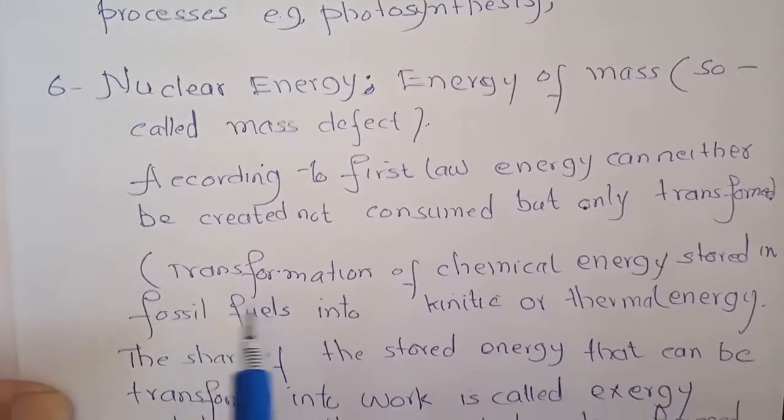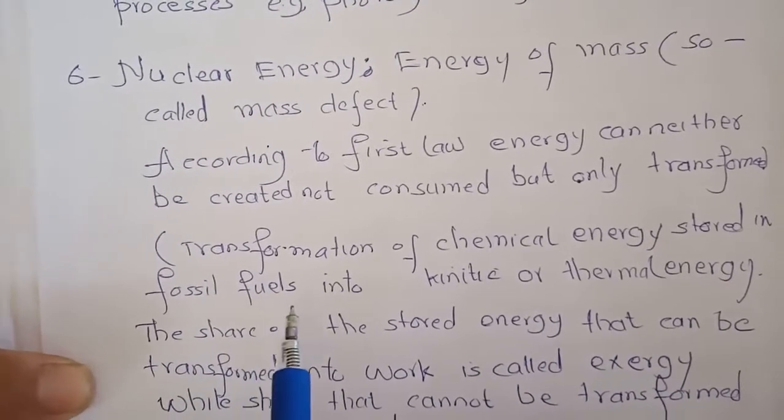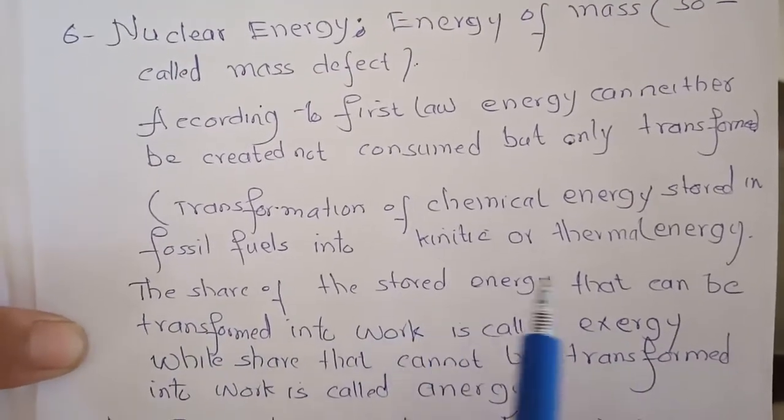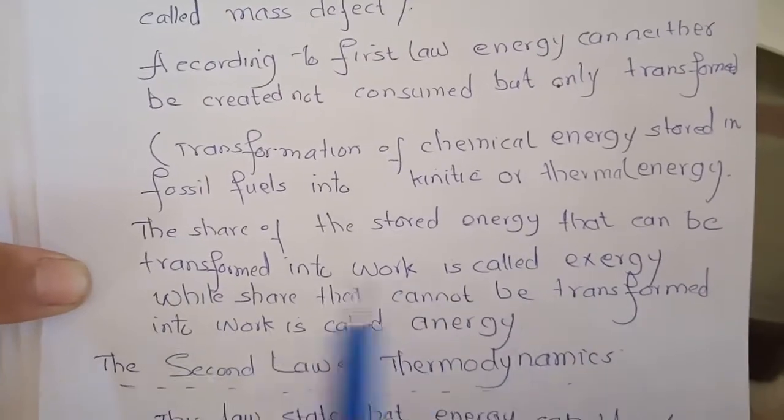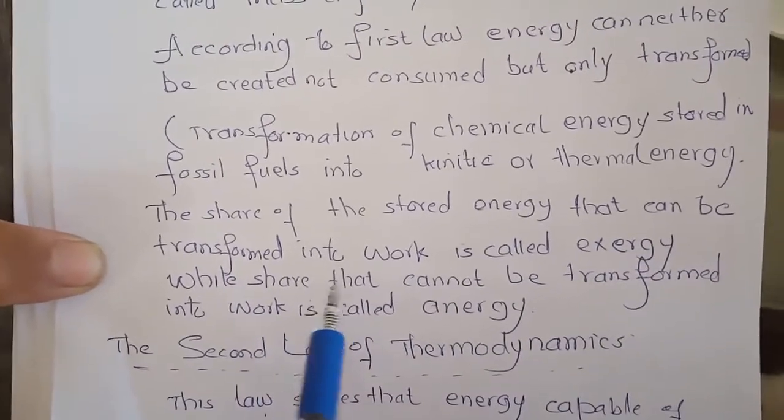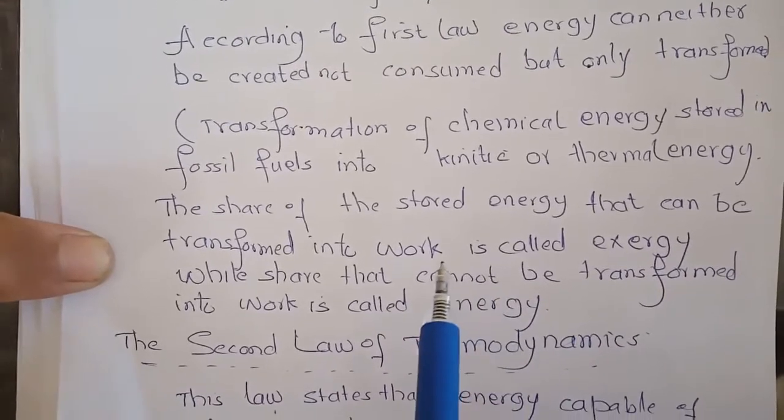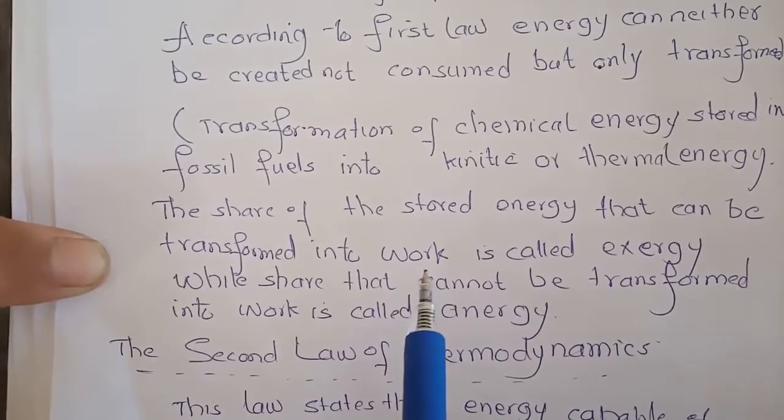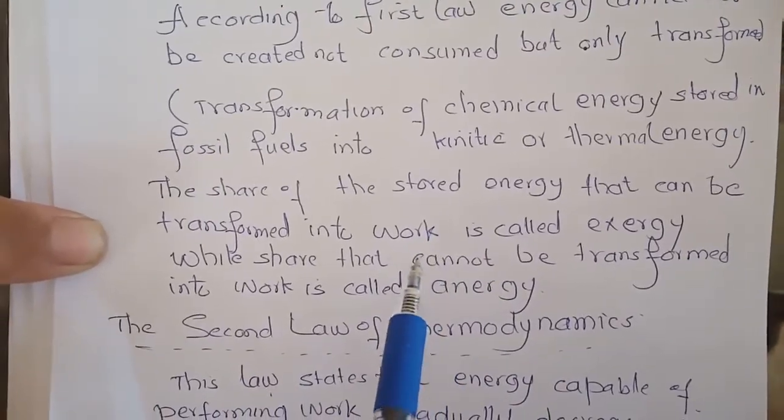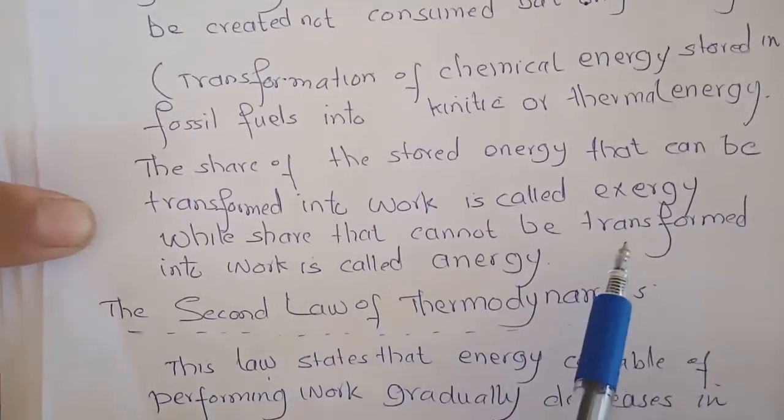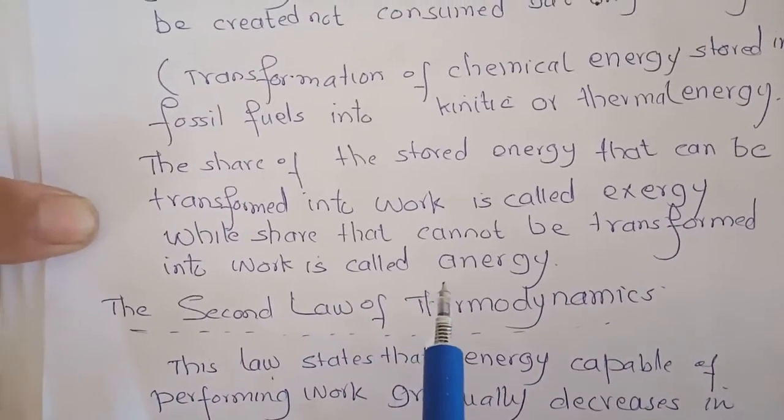For example, transformation of chemical energy stored in fossil fuels into kinetic or thermal energy. The share of the stored energy that can be transformed into work is called exergy. The energy that cannot be transformed into work is called anergy.